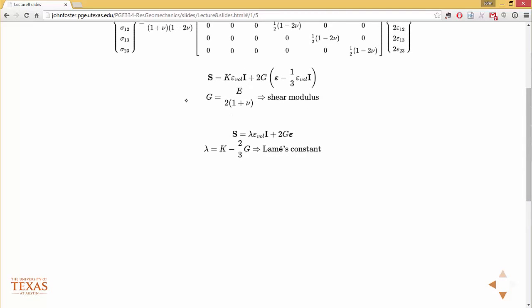So I'm just going to point out that if you look at this equation, I have a term multiplying I, and I have two G times this multiplies I. So if I rearrange that equation, then I would get, basically, K minus two thirds G, times the volumetric strain, times I, plus two G epsilon, where these are tensors. S and epsilon are tensors.